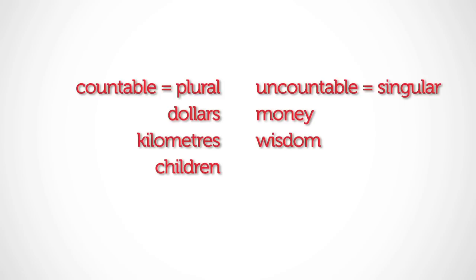Non-countable nouns can also refer to materials such as paper, liquids such as water, and some mass foods like rice and corn. In all cases, the uncountable things do not have clear boundaries, so it is hard to count them.